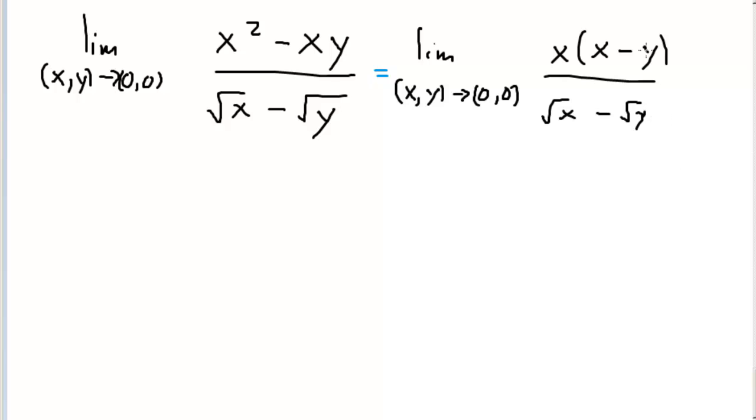Then I'll realize that this x minus y quantity is the difference of squares. I can rewrite this as the limit as x and y go to (0,0).